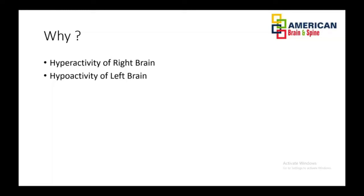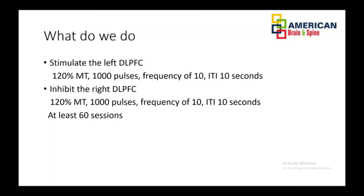What do we do? We stimulate the left DLPFC at 120% of motor threshold, giving about 1000 pulses at a frequency of 10 Hz, with an inter-train interval of 10 seconds. We inhibit the right DLPFC with the same protocol, and we give at least 60 sessions.